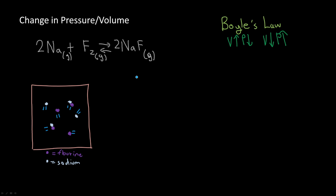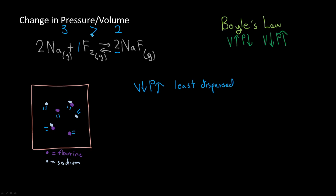When volume goes down and pressure goes up, the equilibrium point shifts to the side with the least dispersed molecules. To determine dispersion, you add up the coefficients. If the reactants have coefficients summing to 3 and the products sum to 2, then the products are less dispersed. Since 2 is less than 3, the equilibrium point shifts to the right — toward the products.